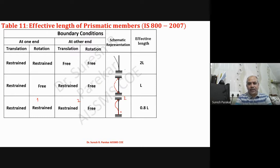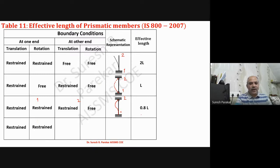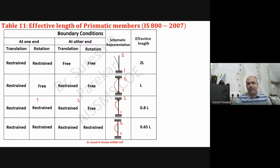Continuing: for both ends hinged, effective length is L. For one end fixed and one end hinged (translation restrained, rotation free), the effective length is 0.8L. For both ends fixed — that is, both translation and rotation restrained at both supports — the effective length is 0.65L. These four cases complete Table 11.